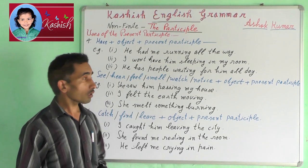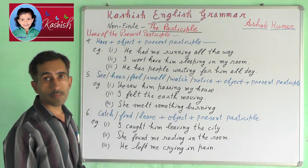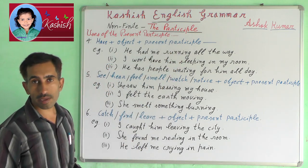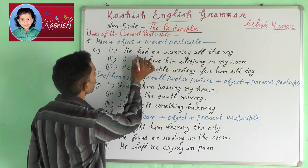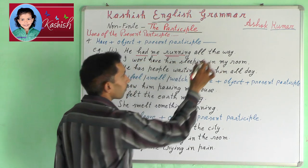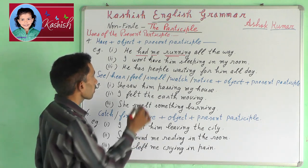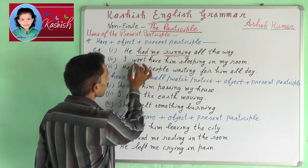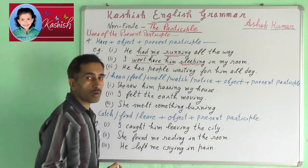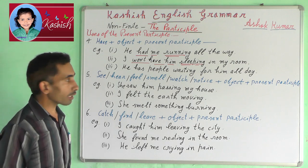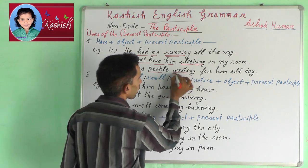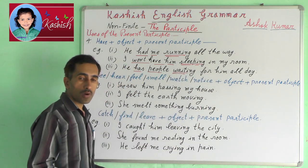Fourth, have + object + present participle — for example: 'He had me running all the way.' Next: 'I won't have him sleeping in my room.' Next: 'He has people waiting for him all day.'